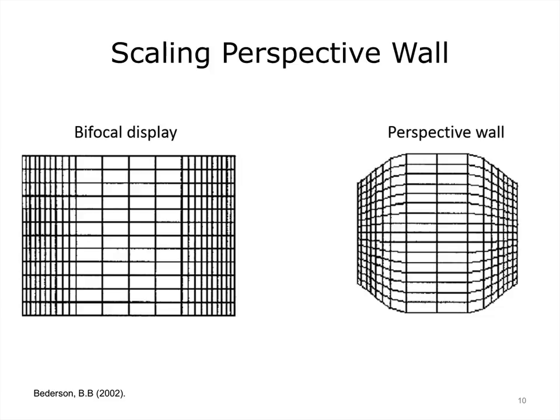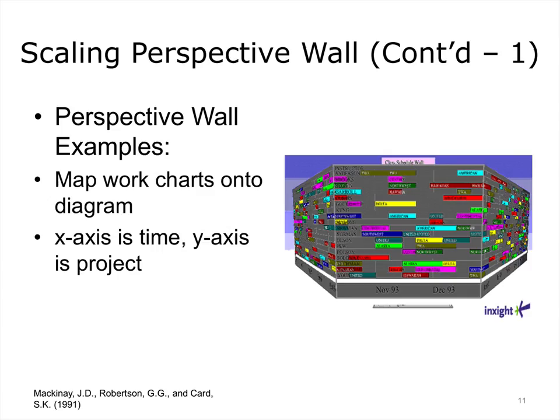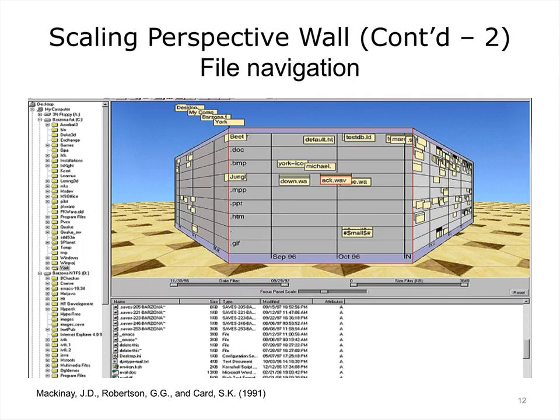Perspective wall uses a variation on the same idea. It uses a real three-dimensional perspective to distort areas outside of the focal view. Here is an example of how a perspective wall could be used to show a large diagram on one screen. It could also be used for file navigation.